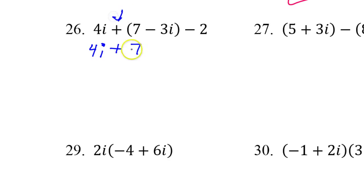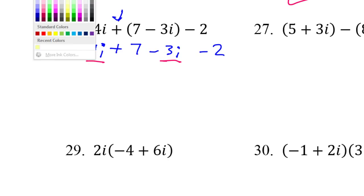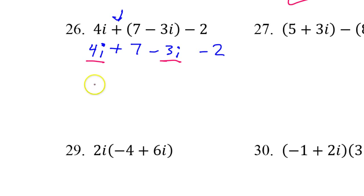When you see a plus in front of parentheses, just erase the parentheses. So I would just like to recopy the problem without the parentheses real quick to make it more obvious. So now it's clear that I'm going to put the 4i and the negative 3i together. That makes 1i, or just i. Then I'm going to put the 7 and the negative 2 together. And that's going to make positive 5.